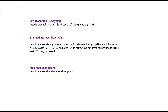In this section, we have discussed patterns of inheritance of HLA genes and polymorphism present in this system. A large number of HLA alleles have been identified by molecular techniques, and a systematic nomenclature system helps to identify these alleles.